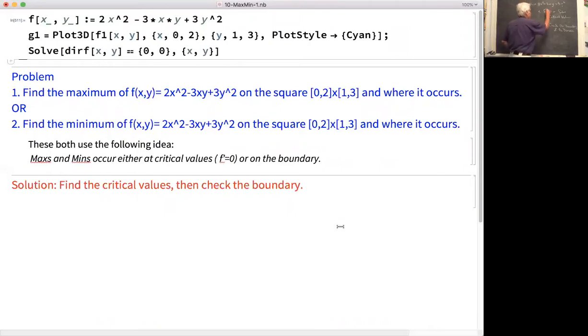We take the derivative now. Now x is a vector. Set it equal to zero and solve. And so you can easily do this by hand. f prime of x and y is 4x minus 3y comma minus 3x plus 6y. And you can easily check that the only critical value is the origin. 0, 0 is a critical value of this. And the value of the function there is zero. So the critical value that we need to check here is 0, 0. And f at 0, 0 gives you 0. Could be a min, could be a max, but we have to check the boundary now.